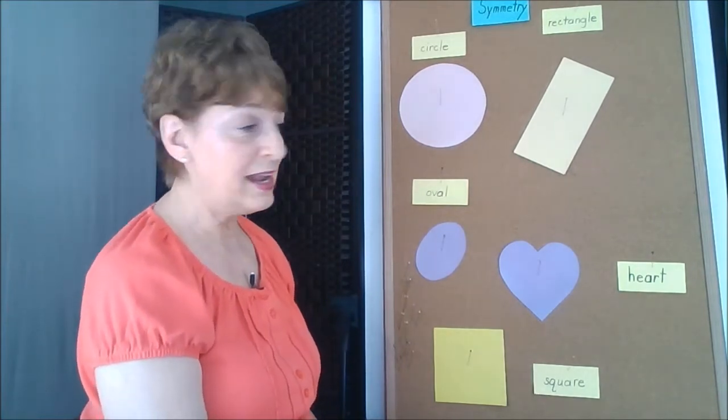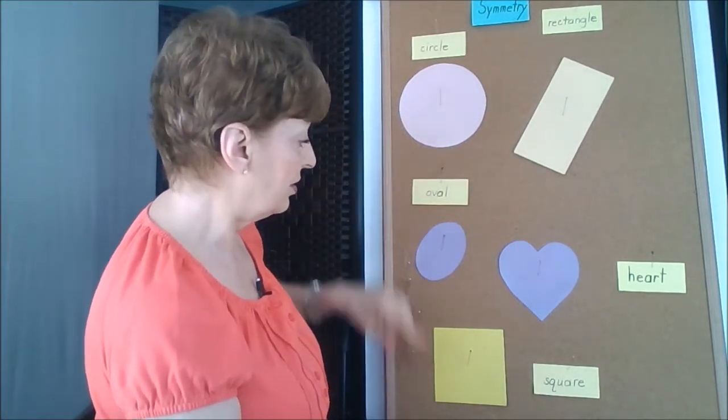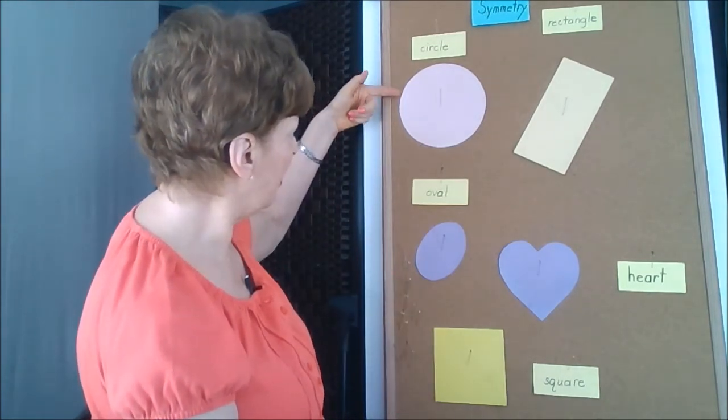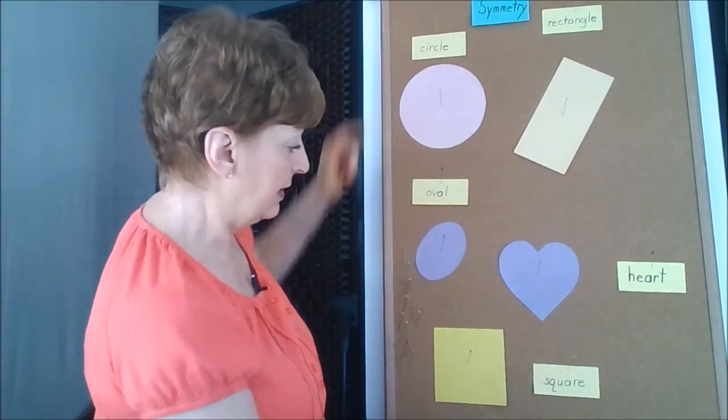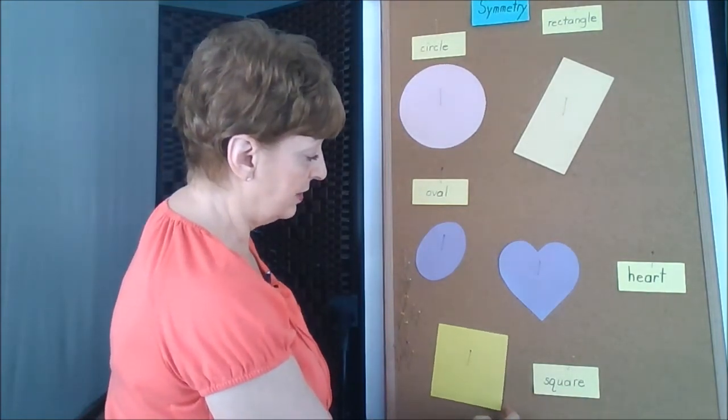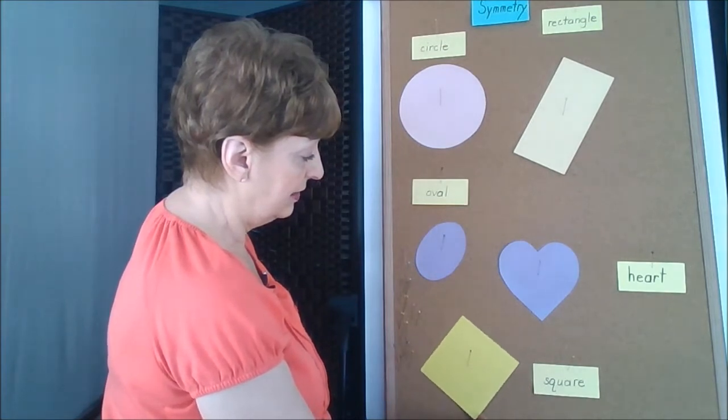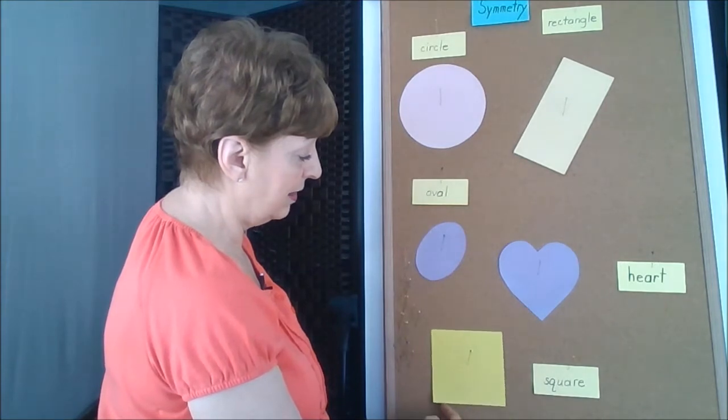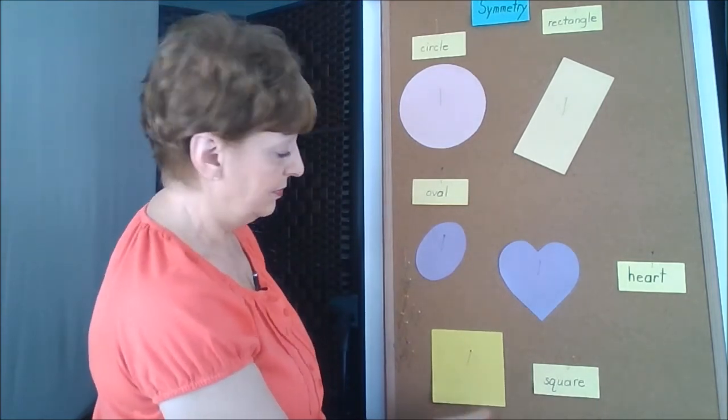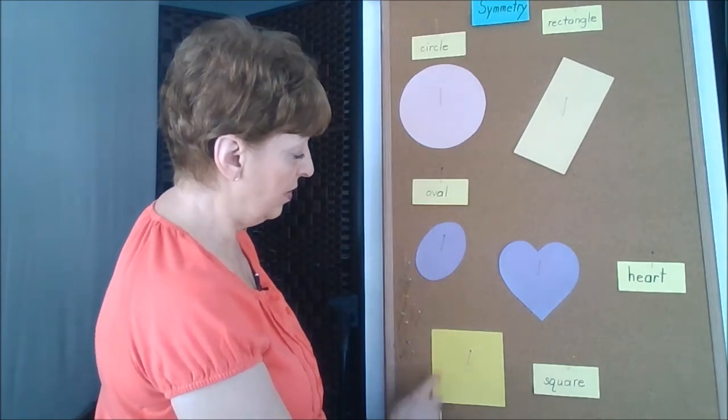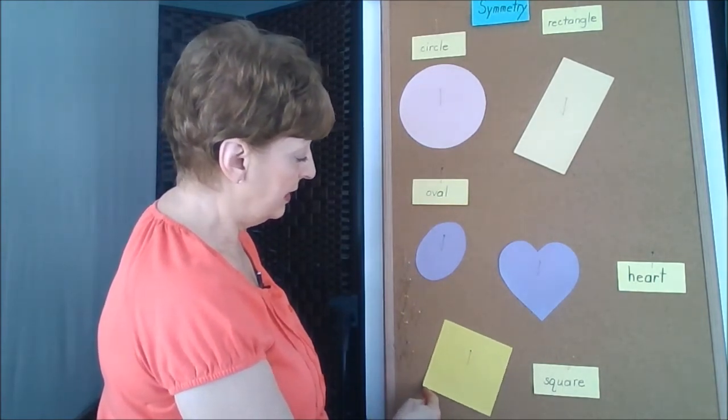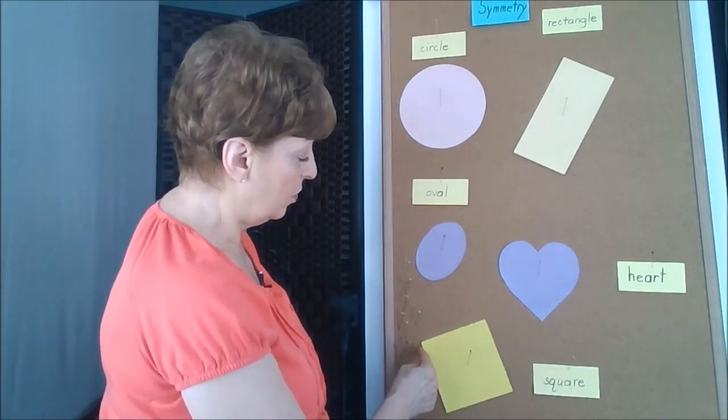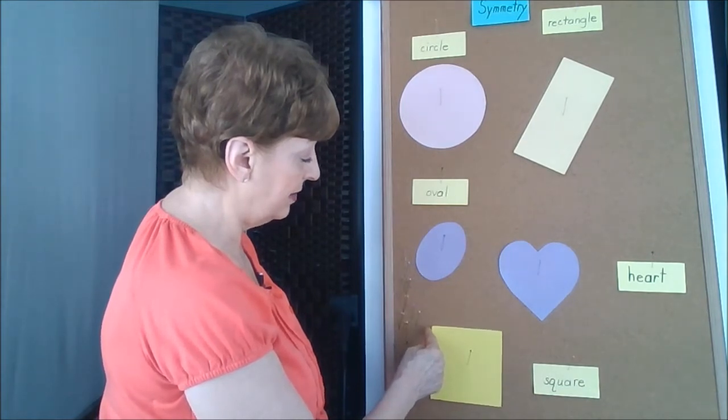So when we rotated, our square and our circle looked the same, no matter how we put it. The circle, though, even looks like a circle when it's turning. The square doesn't. Now it looks a little crooked. And it doesn't look like a square again until we make the complete turn. When this corner has to move up here before it looks like a square again. It is a square, but it doesn't look like the square that we started with until it gets back to that position.